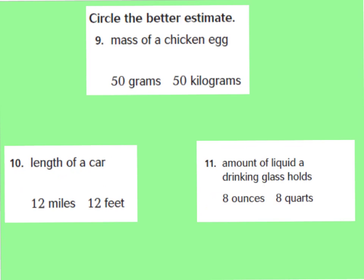Knowing what you've learned about customary and metric units, I want you to circle the better estimate for questions 9, 10, and 11. The mass of a chicken egg is 50 grams — there's no way it could be 50 kilograms, since one kilogram equals about the weight of a baseball bat. The length of a car is 12 feet, not 12 miles. The amount of liquid in a drinking glass is 8 ounces, because our chart showed 8 ounces equals 1 cup.